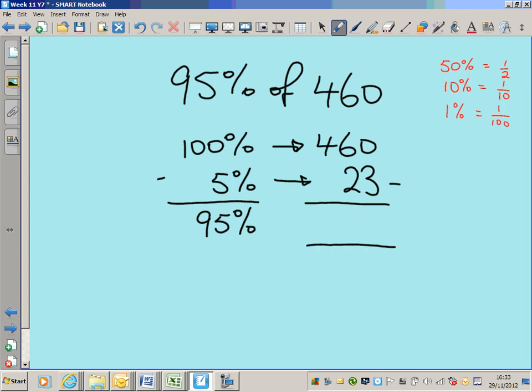I'll then take that away. 0 minus 3 I can't do, I have to borrow. So I'll borrow 1 from the 6, leave 5 and put it there. 10 minus 3 is 7. 5 minus 2 is 3. 4 minus nothing is 4. And that gives me an answer. 95% of 460 is 437. Does that make sense? Well, I would say it does, because 95% is nearly all of it, isn't it? And 437 is nearly all of 460. My answer is credible.